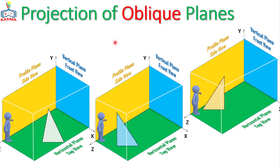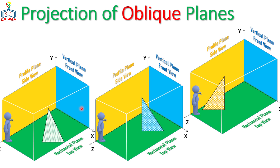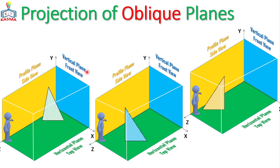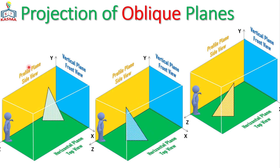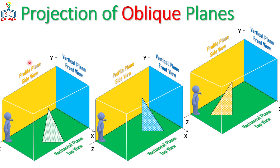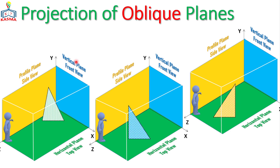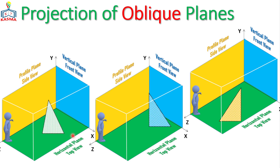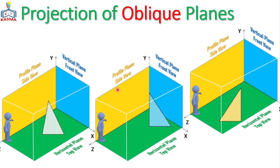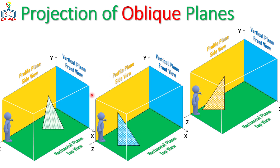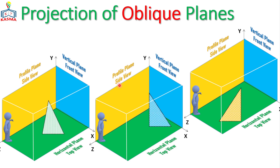In this video, projections of oblique planes will be presented. Oblique planes are planes which are not perpendicular or parallel to either of the three principal planes. That means the plane is neither parallel nor perpendicular to any of the three principal planes. If such types of planes exist, we call it an oblique plane.